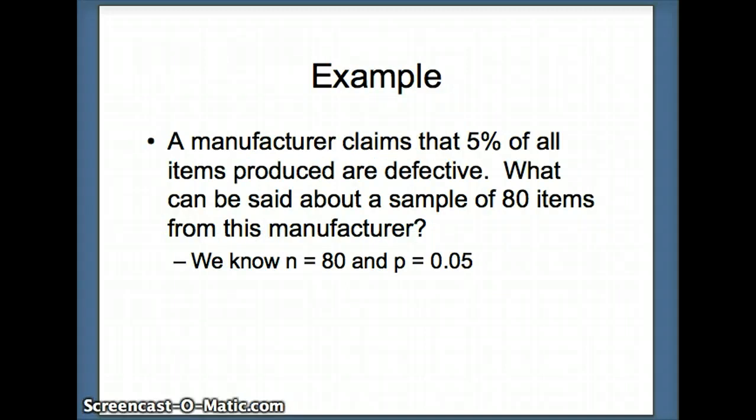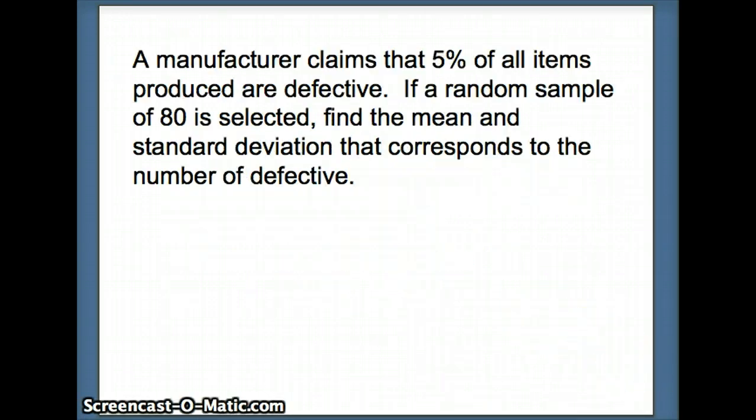Our next example says that a manufacturer claims 5% of all the items produced are defective. What can be said about a sample of 80 items from this manufacturer? So N is 80, 80 independent trials. We are assuming that the defective ones don't all occur in batches, but are sprinkled throughout. The probability of an item being defective is 0.05. So we want to find the mean and the standard deviation that corresponds to the number of defective items. We have P is 0.05, probability of success - success in this case means defective. Q, the probability of failure, is 1 minus 0.05, which is 0.95.